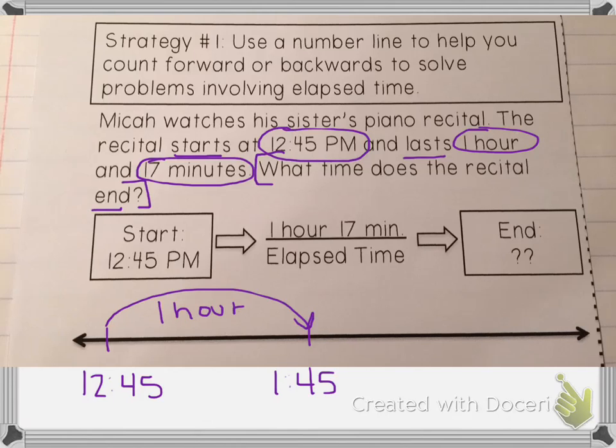Then it goes 1 hour and 17 minutes. Jumping up 17 minutes is a little bit complicated, so I'm going to break that apart. I know if I'm at 1:45, in 15 minutes it'll be 2 o'clock. So I'm going to make a jump of 15 minutes.